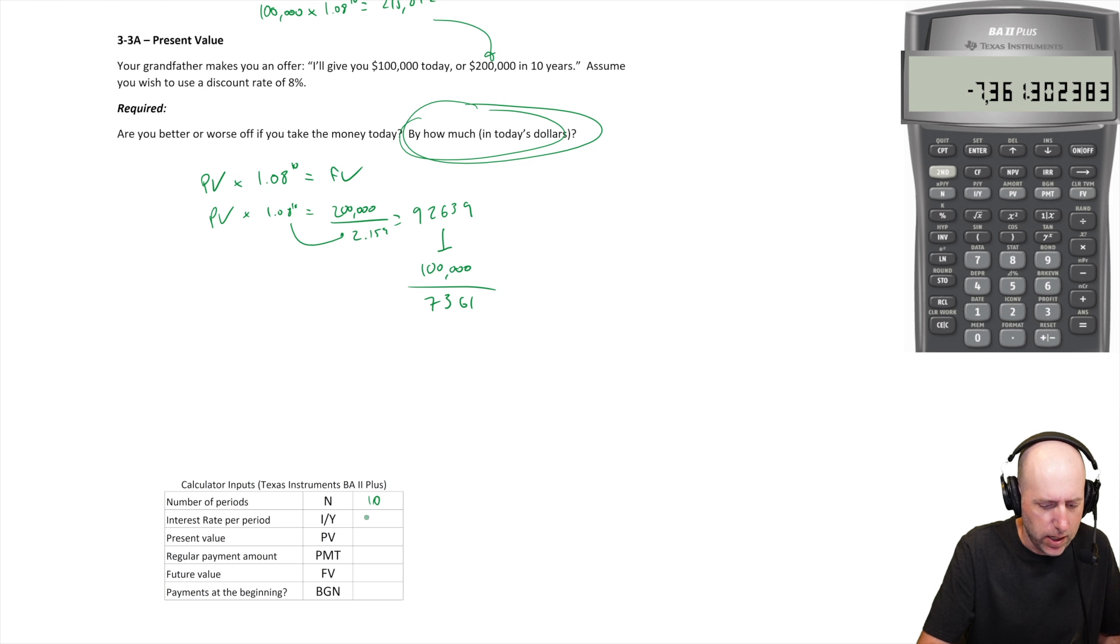Our interest rate is 8%. Our present value is what we're solving for. Our PMT is 0. We don't have to worry about a payments at the beginning thing. And our future value here is positive $200,000.